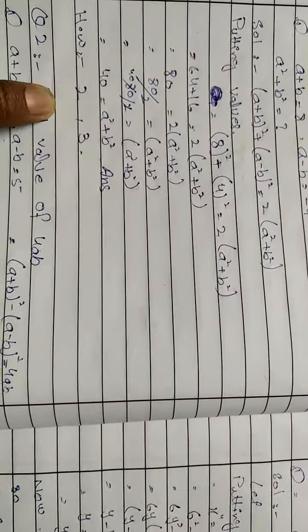The formula is (a + b)² - (a - b)² = 4ab. Now we will put values. Instead of a + b we put 8², minus instead of a - b we put 5².